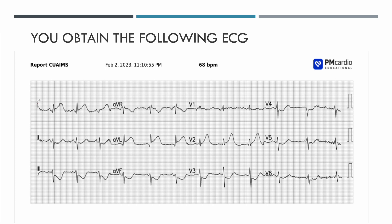If you look at lead 1, you notice there is a little bit of elevation — some ST elevation in lead 1. In lead 2, we see some ST depression. In lead 3, there's fairly substantial ST depression, and some depression in AVF as well. So you have ST depression in the inferior leads. That may be due to ischemic changes in the inferior leads, or it may be due to reciprocal changes from elevation in other areas of the heart. We have elevation in lead 1 and depression in the inferior leads. AVR is not super relevant to this particular case.